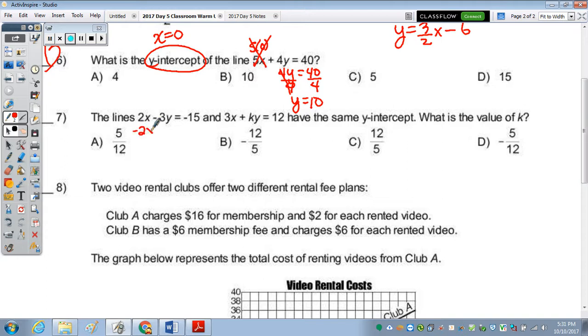So if I solve this one for y, there's not much space. It's negative 3 times y equals negative 2x minus 15. Divide by negative 3. We end up with y equals 2 thirds x plus 5. So this intercept is 5.